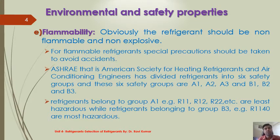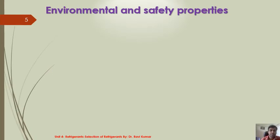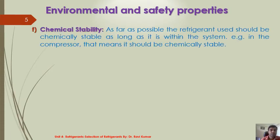The refrigerants belonging to group A1, such as R12 and R22, are the least hazardous, while the refrigerants belonging to group B3, for example R11 and R40, are the most hazardous refrigerants. The next property is chemical stability. As far as possible, the refrigerant should be chemically stable as long as it is within the system — for example in the compressor — meaning it should be chemically stable for a long time.